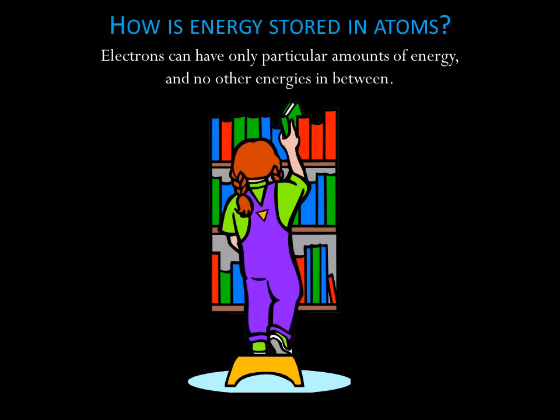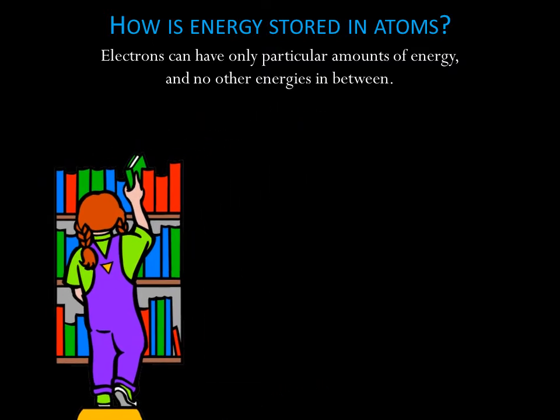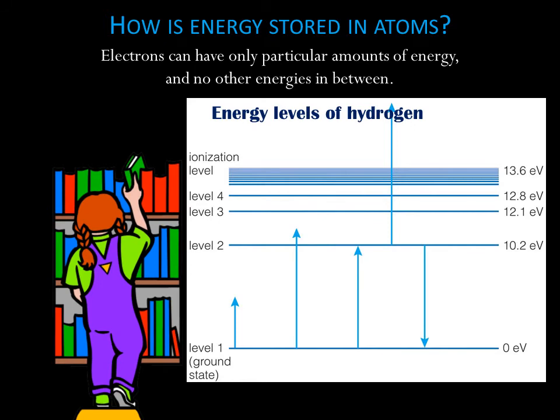The energy stored in electrons in atoms has a strange but very important property. The electrons can have only particular amounts of energy and no other energies in between. It's like a bookshelf. You can put a book on any shelf you want, but it doesn't make sense to have a book in between the shelves. The possible energies of electrons in atoms are like the possible places you can put a book on a bookshelf.